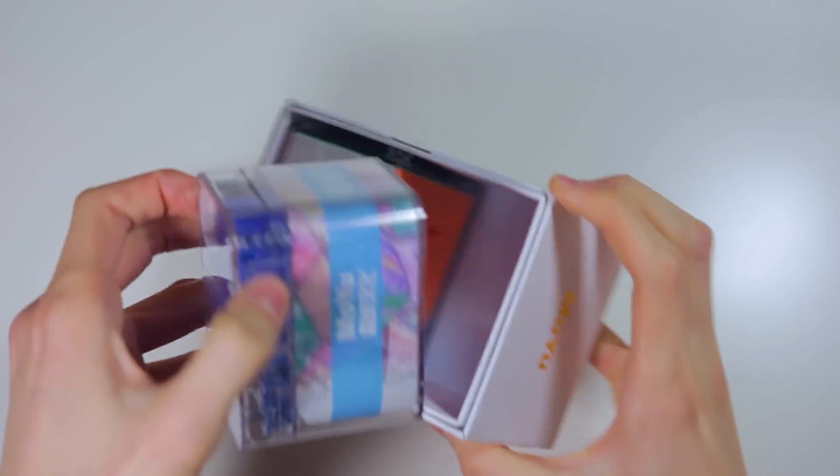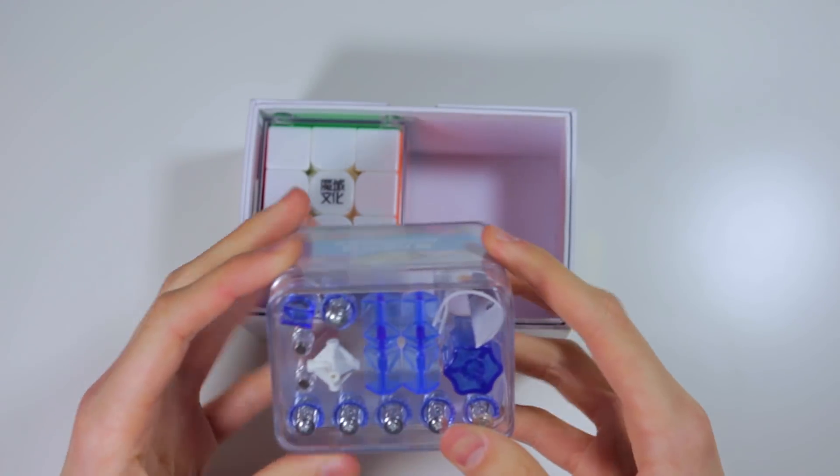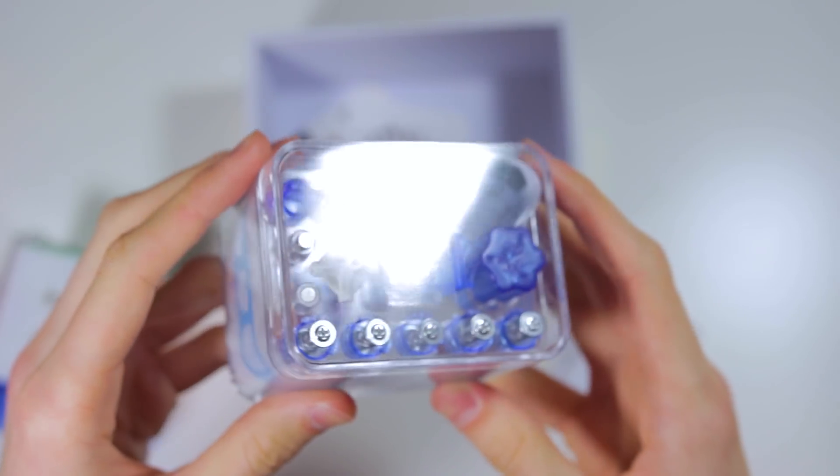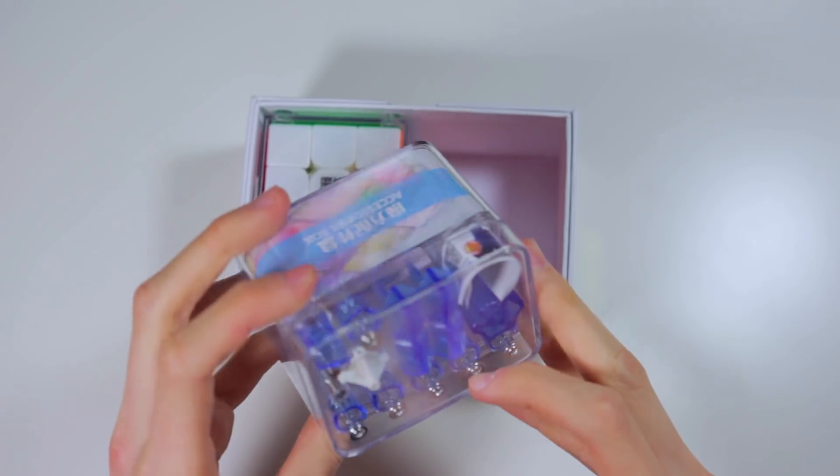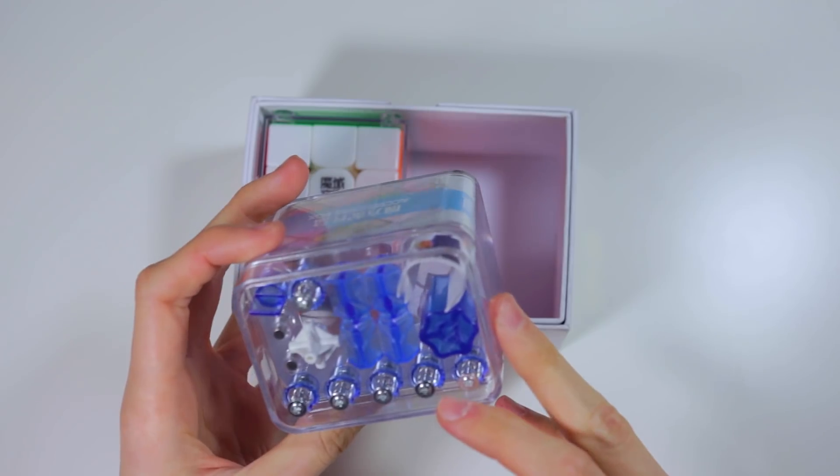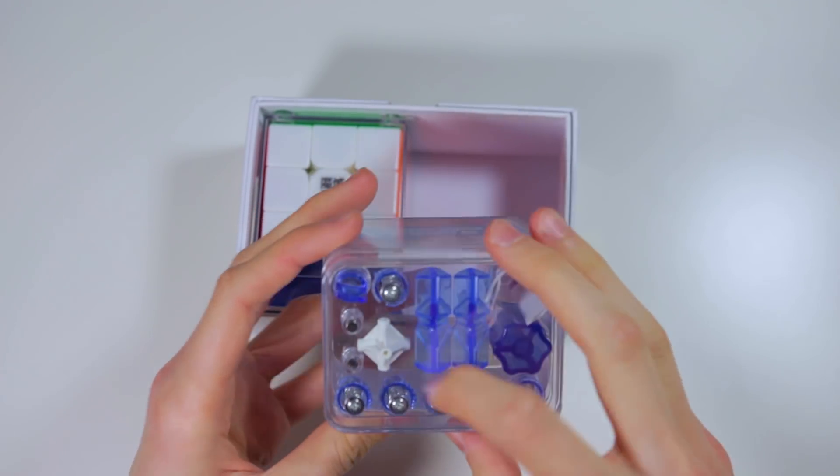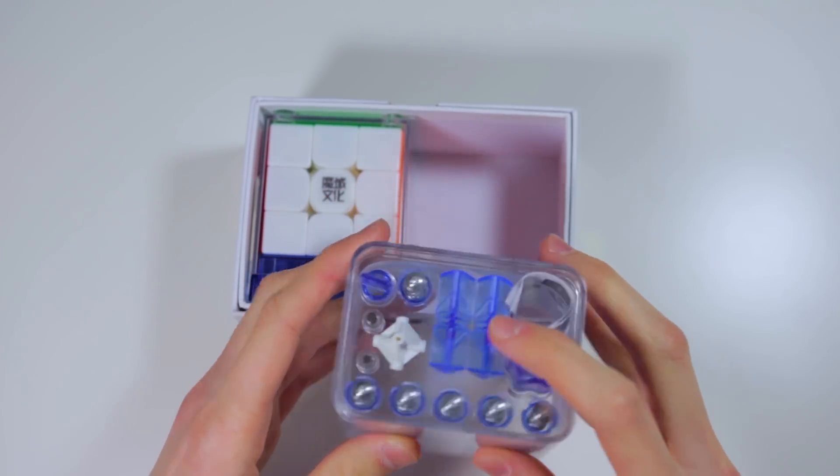We have the cube on the left. And we have this package of what looks like a bunch of different adjustment tools. We have some extra screw spring sets with the adjustment tool for the spring compression system. A screwdriver here, some magnets, an extra core.